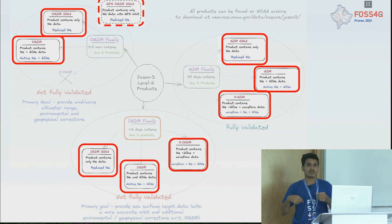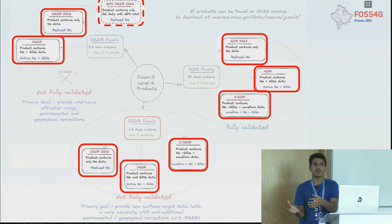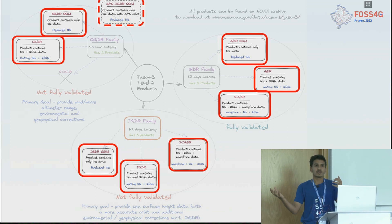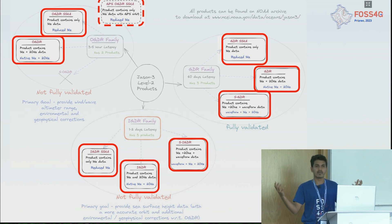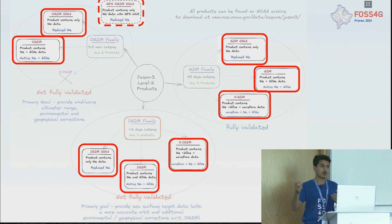You should understand your requirements first. For example, if your water body is small, you would require 20Hz data. JASON-3 can record at two frequencies: 1Hz and 20Hz. At higher frequency the data volume will be large, but you get finer resolution. Depending on that, you can choose the appropriate product.